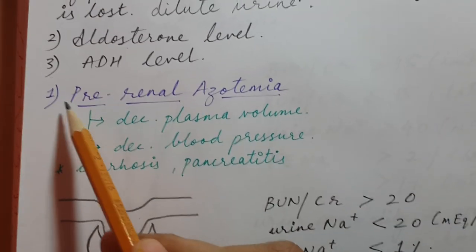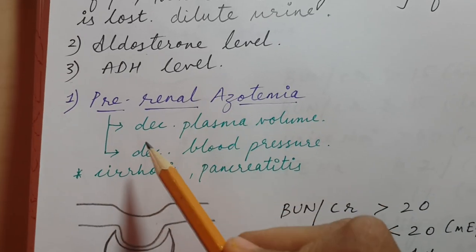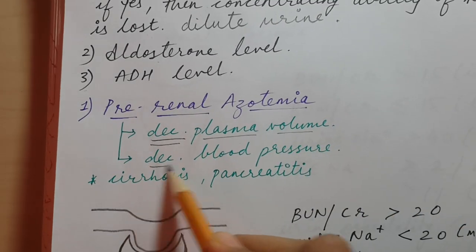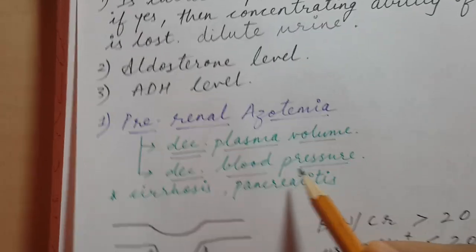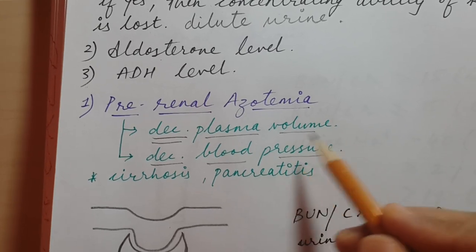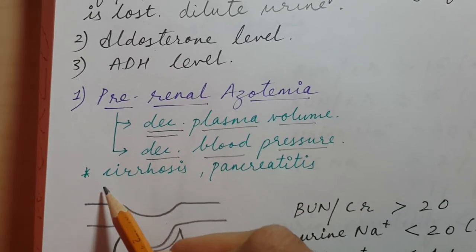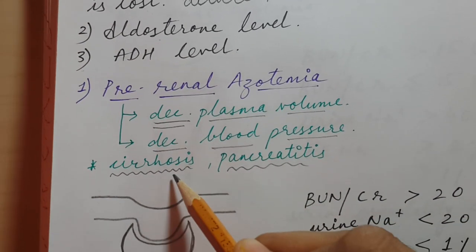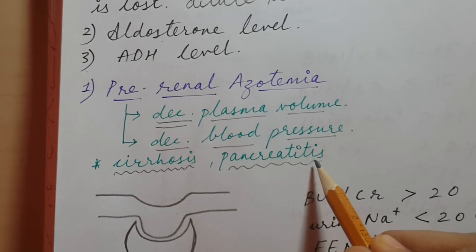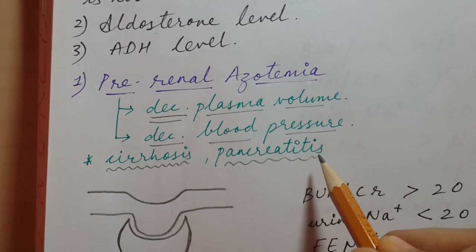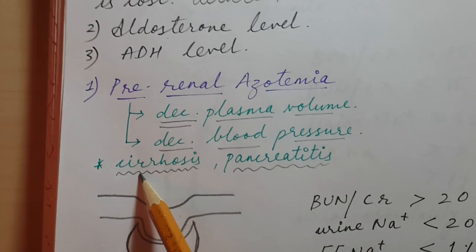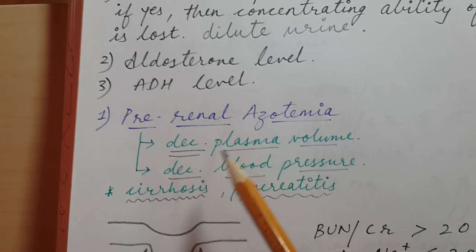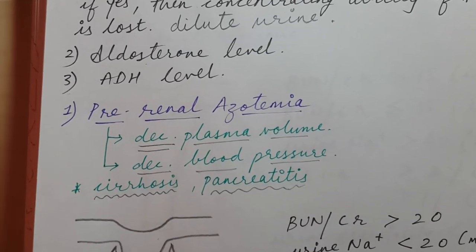The first cause is pre-renal azotemia. It is mainly due to decreased blood volume or decreased blood pressure — from sepsis, hypotension, dehydration, bleeding, and so on. Two causes that most people tend to forget are cirrhosis and pancreatitis. In pancreatitis, there is loss of fluid due to third spacing. Both cirrhosis and pancreatitis can manifest as pre-renal azotemia and present as acute kidney injury.